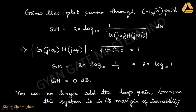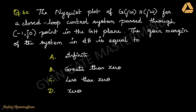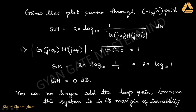The formula for gain margin is 20 log(1 / magnitude of the open loop transfer function), which gives the value in decibels. From the given question, the Nyquist plot meets the axis at (−1, j0), from which we can identify the magnitude as 1. So 20 log(1) = 0, meaning the gain margin is 0 dB.